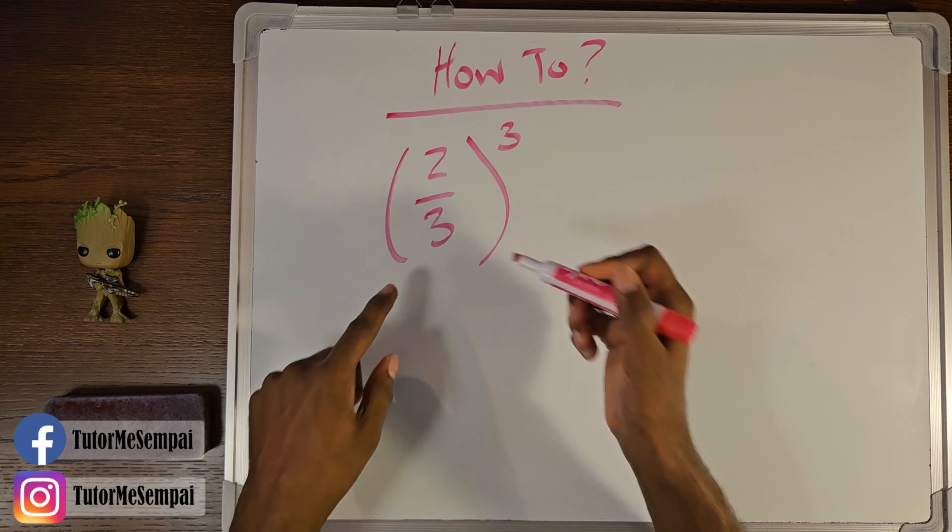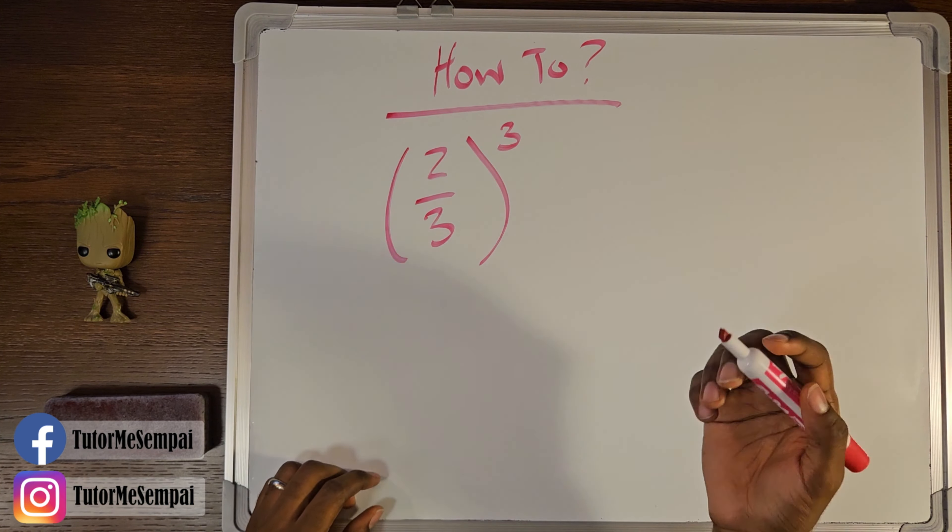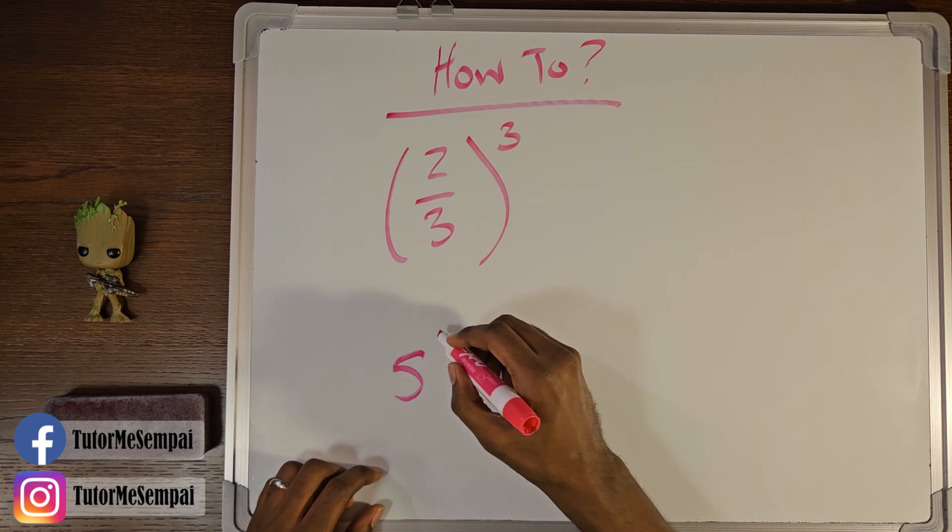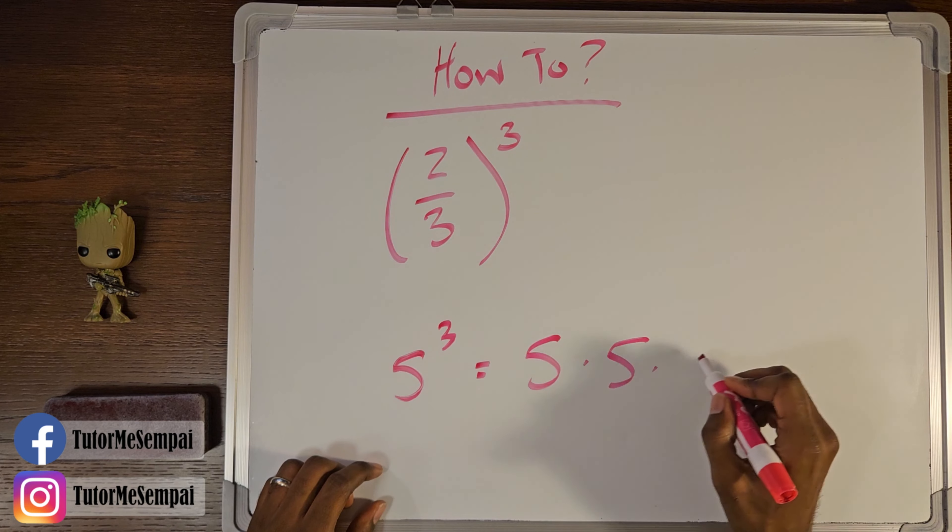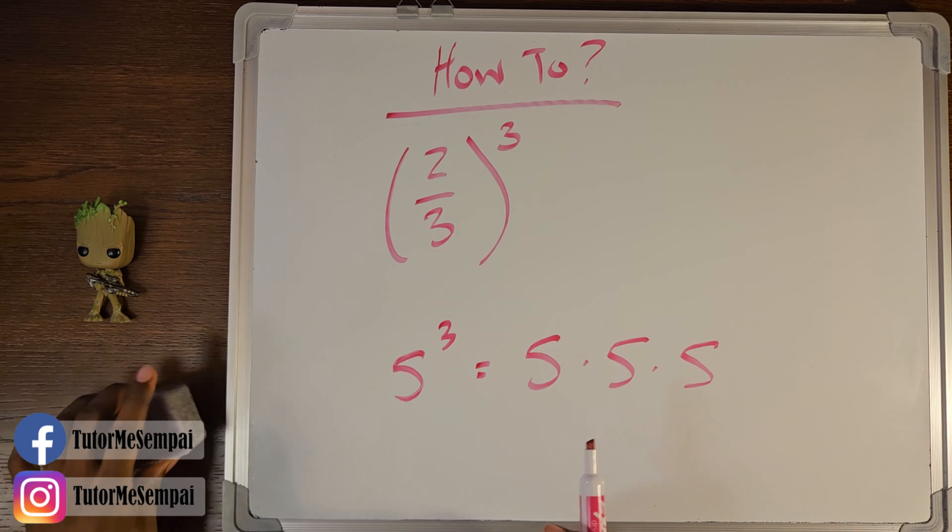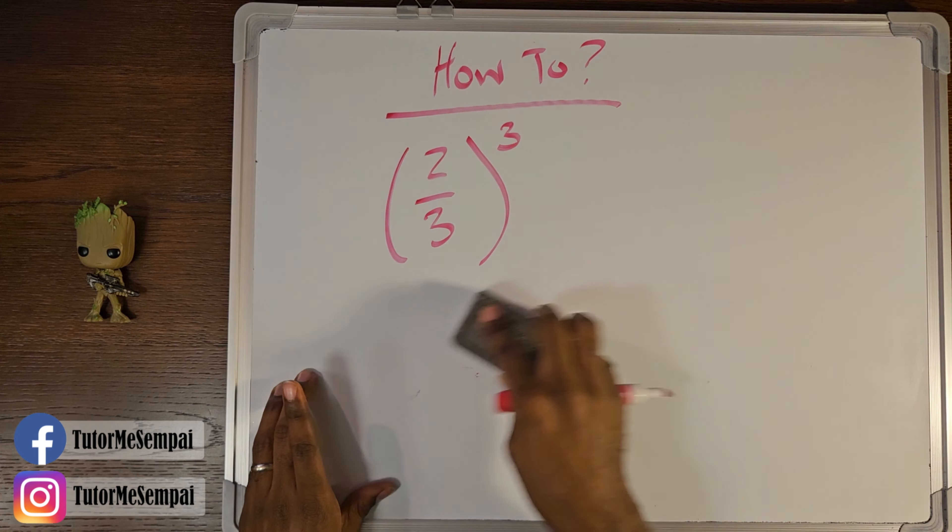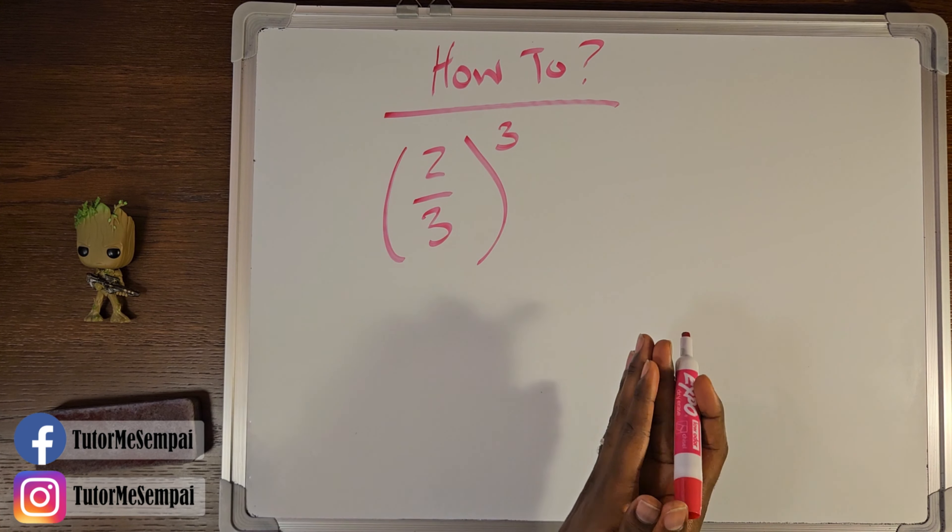So we have two thirds raised to the third power. Now remember, if you had a whole number, let's say five cubed, this would just be five times five times five, right? You multiply this base by itself this many times. However, fractions look different. So do we do the same thing? The answer is going to be yes, we do the same thing.